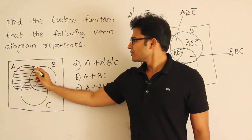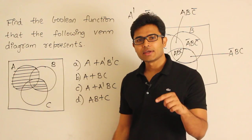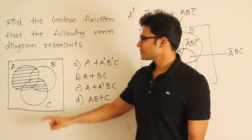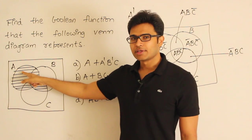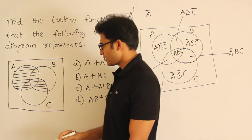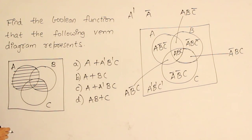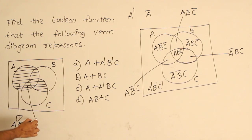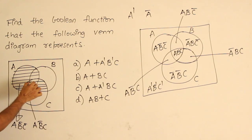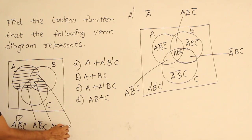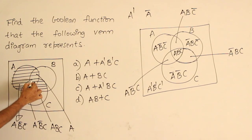Looking at the shaded region: the entire circle A is included in the function. That entire A region consists of four parts: A, B prime, C prime; then A, B prime, C; then A, B, C; and A, B, C prime. So the shaded region within A contains all four of those minterms.